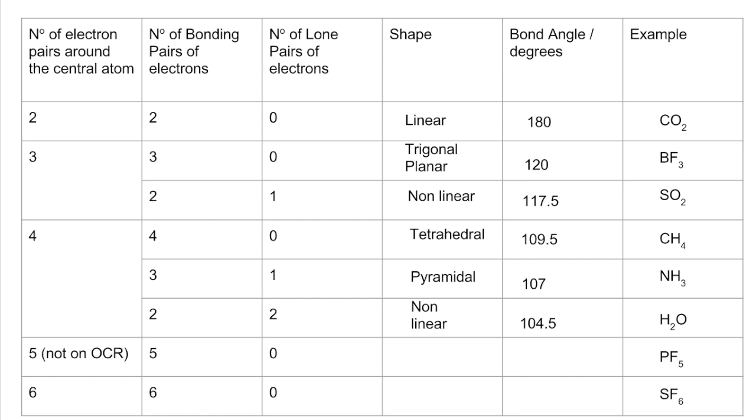So the five electron pairs, all bonding pairs I'm just looking at. PF5 is the example. So we have trigonal bipyramidal shape, and we have two angles in there. We have 120 degrees around the middle, and we have 90 degrees from the vertical to the middle.